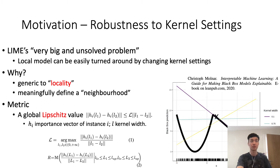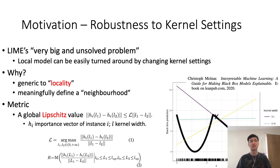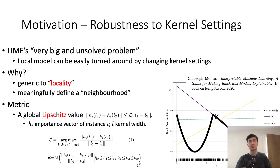The second problem of LIME, as noted in the literature, is a very big and unsolved problem: the unrobustness to kernel settings. Essentially, this problem is about how to meaningfully define the locality of the local surrogate model — that is, how to define the weights of each perturbed sample in the training of the local linear regressor. In our study, we introduce a new global Lipschitz value as the metric for this robustness.